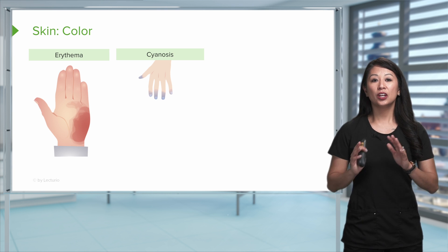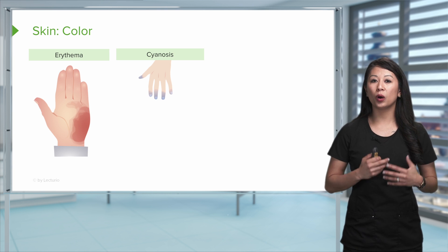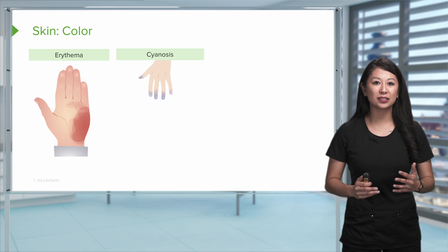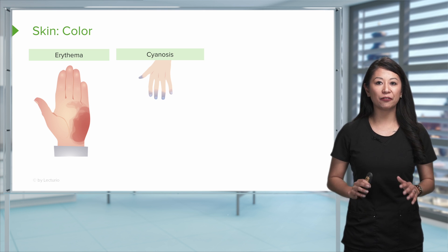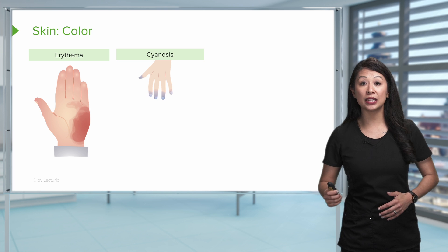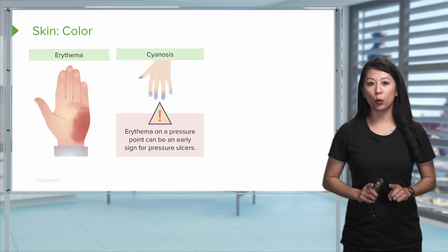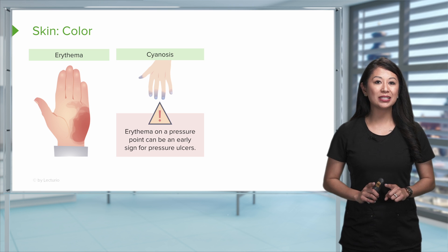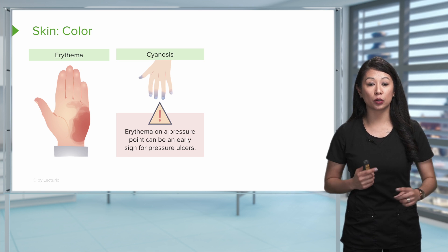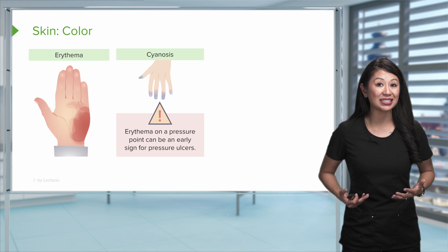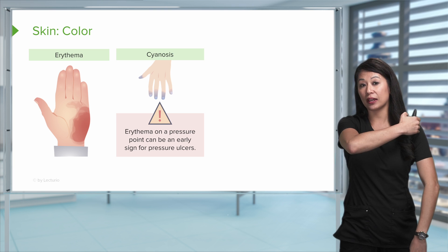Next, you may see erythema, or a really fancy word, which is an area of redness. This can happen for a couple of different reasons. This can be from irritation. It can be from injury.